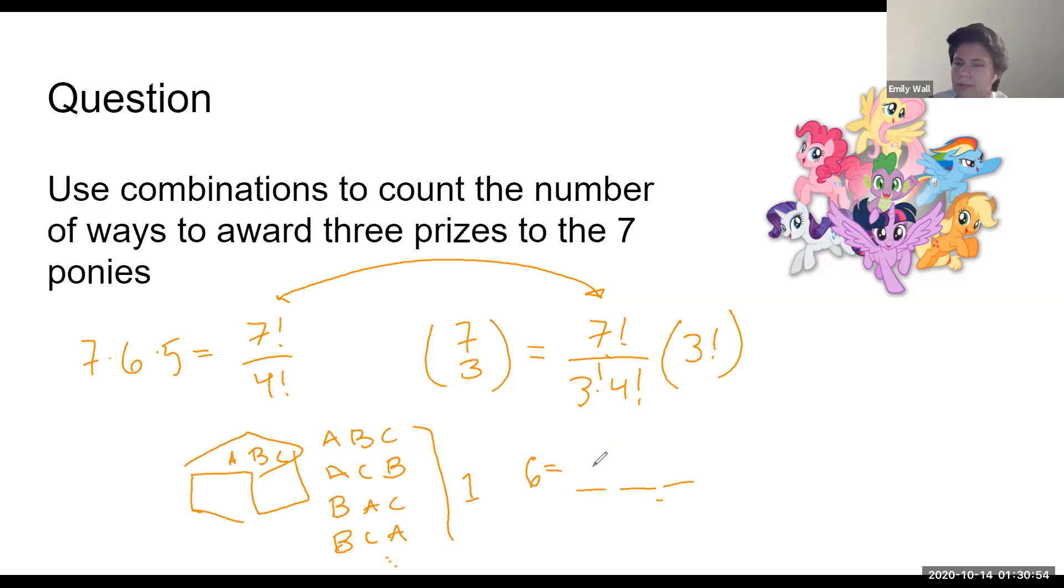We're back to product rule. Three ways for first place, two ways for second, one for third. So remember, we got our box of three ponies that came from the seven choose three, we just need to put them in order, so three factorial.